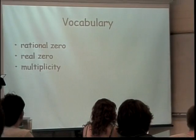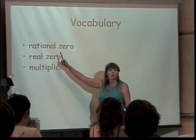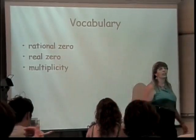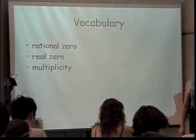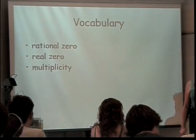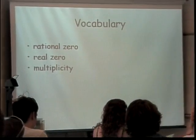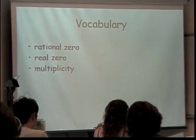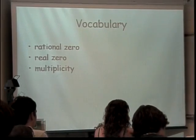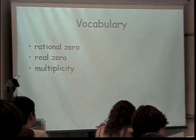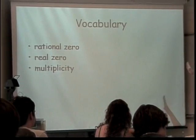For example, we need to know, when we're asked for rational zeros, what it is we're looking for. What are rational numbers? You have to define them not as not something, but as something. Numbers that can be written as a fraction. Rational numbers are numbers that can be written as a fraction, where they have an integer divided by an integer, and zero's not on the bottom. Those are rational zeros.